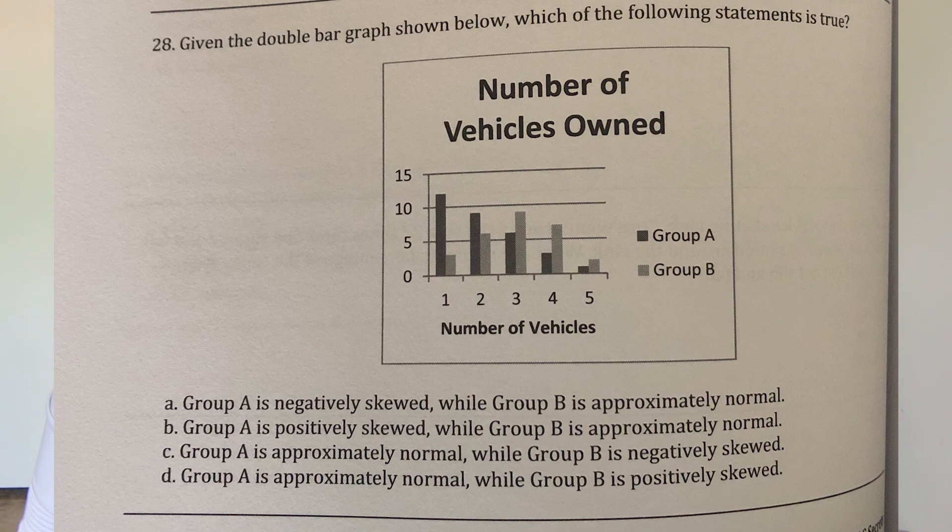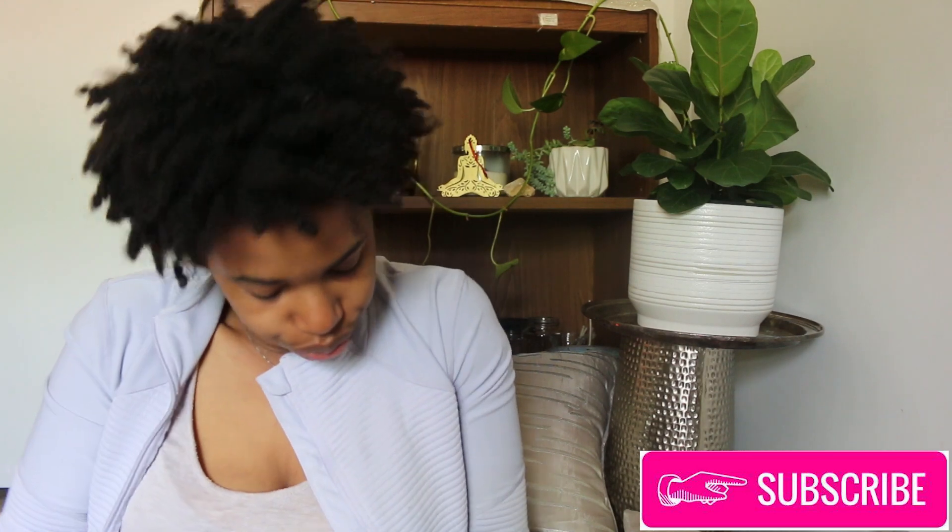Hmm, okay — group A is positively skewed? I'm not really sure. Group B, I don't think it's... wait a minute, I have no idea. I guess if they meant like one is less than the other as far as the number of vehicles owned. I'm gonna say that group B is approximately normal — I guess because group B kind of goes up and down. They both do that though. I'm just gonna say it's B — approximately normal.